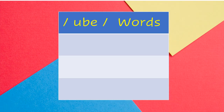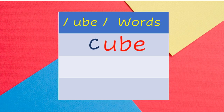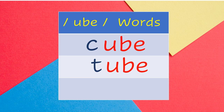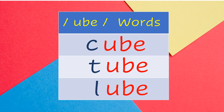Ube words. Q-ube: Cube. T-ube: Tube. L-ube: Lube.